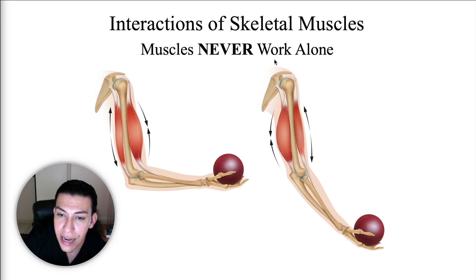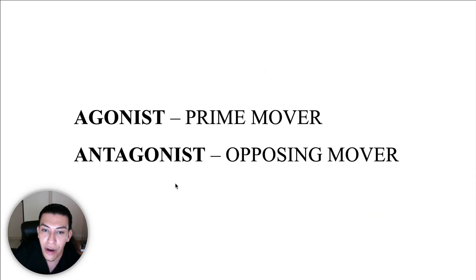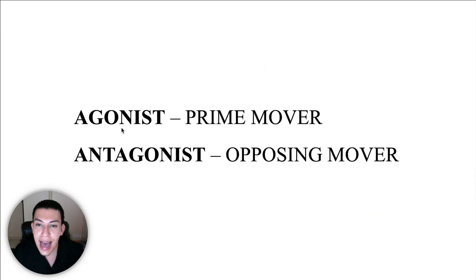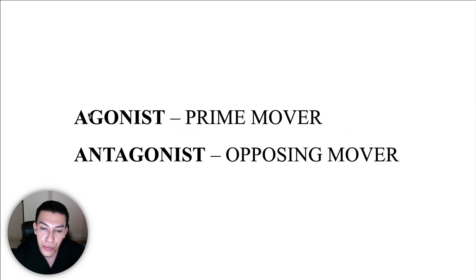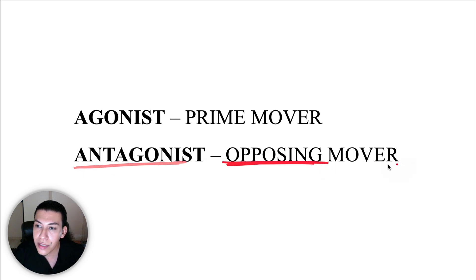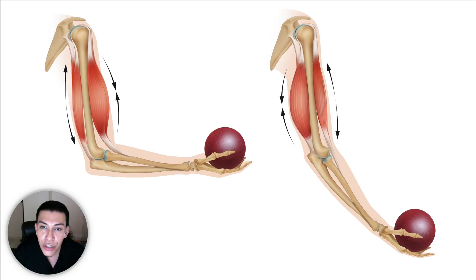The very first ones we have are agonist and antagonist. An agonist is going to be the prime mover — this is the muscle that is responsible for the movement. The antagonist is going to be the opposing mover. Let's take a look at what this means.